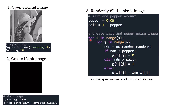The pepper and salt variables represent the amount or percentage of salt and pepper noise. Inside the for loop, we go through every row and column of the blank image. For each position, we generate a random number using the numpy.random.random function, which creates a random number from 0 to 1. If the random number is less than 0.05 (the pepper variable), we fill the blank image with 0 (pepper noise). If the random number is greater than 0.95 (the salt variable), we fill it with 1 (salt noise). If the random number is between pepper and salt, we fill the blank image with the pixel value of the original image at the same location. The for loop repeats until the last row and column of the blank image, resulting in 5% salt and pepper noise.